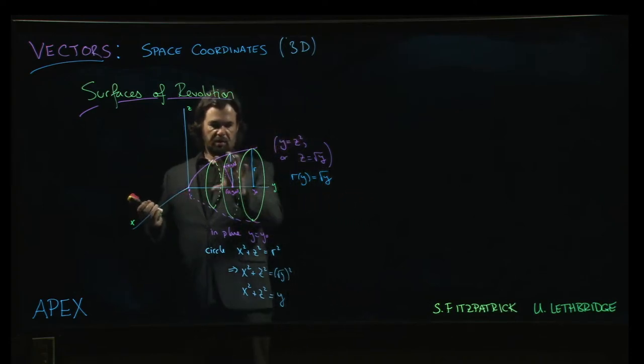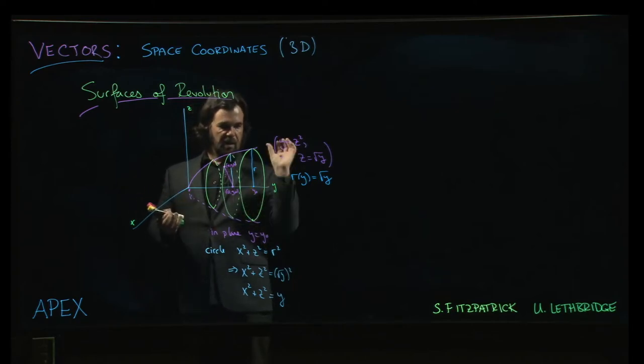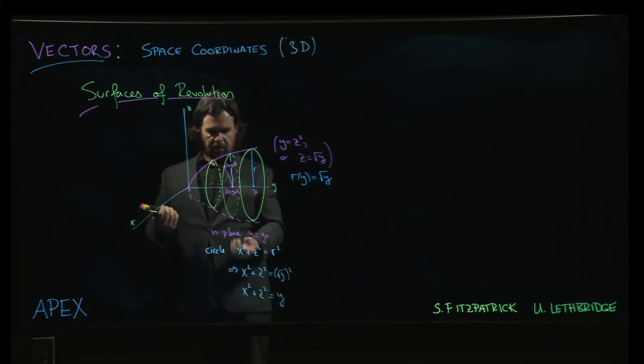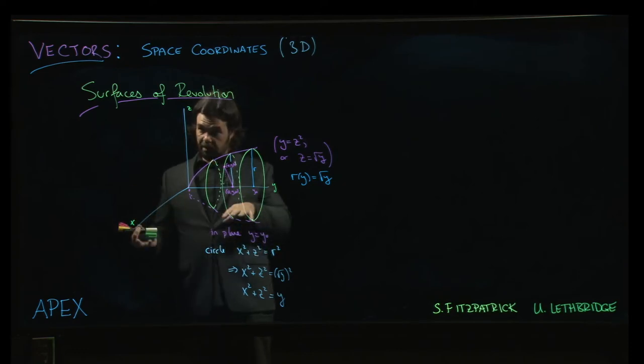And so you'll notice that in each case, you start with a curve in one of the coordinate planes. You're going to revolve it around an axis. The radius should be given as a function of the variable corresponding to the axis you're revolving around. And so typically you'll have a circle. You'll have two of the variables, x squared plus z squared, or maybe x squared plus y squared, or y squared plus z squared.